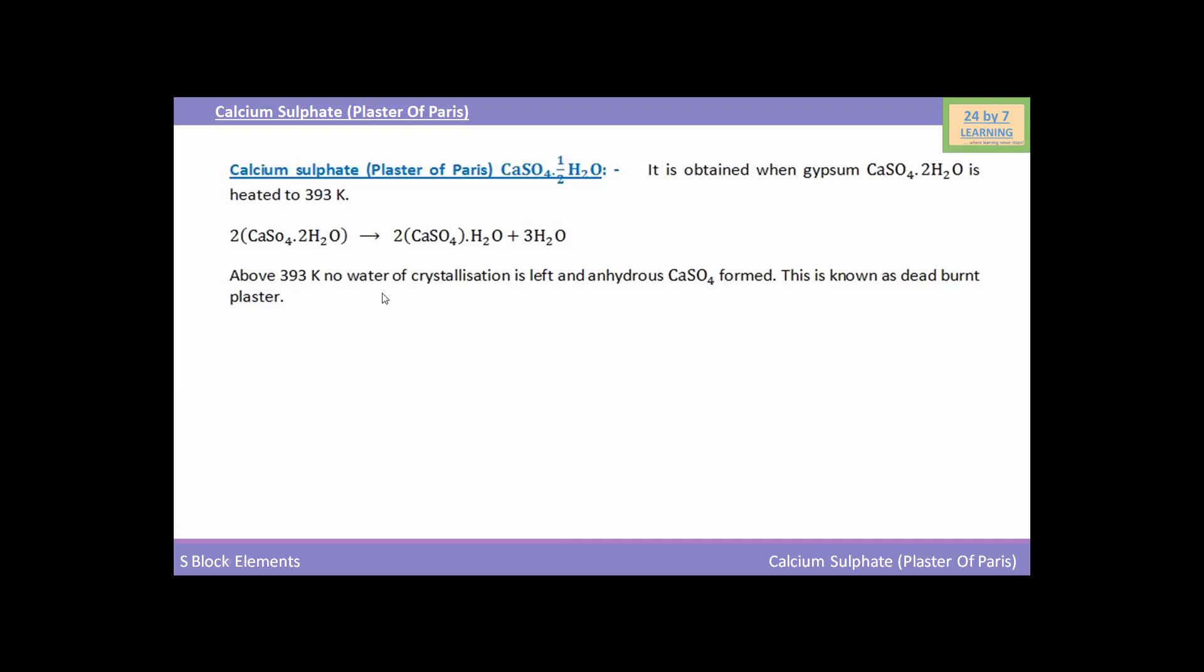Above 393 Kelvin, no water of crystallization is left and anhydrous CaSO4 is formed. This is known as dead burnt plaster.